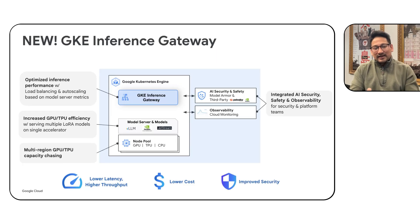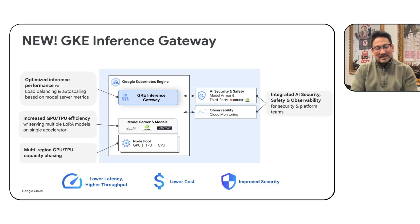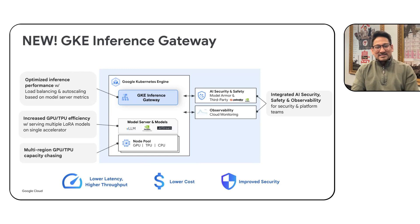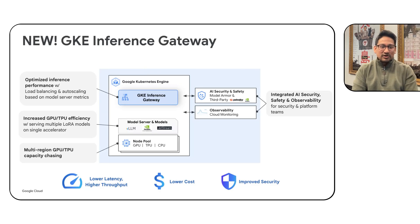LLMs themselves can be an attack surface — they could be jailbroken, susceptible to prompt injection attacks, leak customer sensitive information, or even serve harmful content. You need AI safety and security guardrails against all of this. Traditionally, developers have had to build this into their own applications, which is a fragmented approach and hard to manage and govern centrally. With GKE Inference Gateway, we have embedded AI security and safety right at the gateway itself, allowing consistent protection for all models running across your cluster.